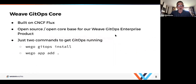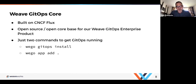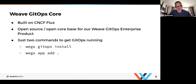Weave GitOps Core is built closely on top of the Flux project, which is a Cloud Native Computing Foundation project. It's a community-driven project, although Weaveworks does have some of the key maintainers. We've built Weave GitOps Core to be an open source, open core base for our overall product, because this space is driven by open source, and we want people to be able to try it, see how it works, then discover the product and get further features.